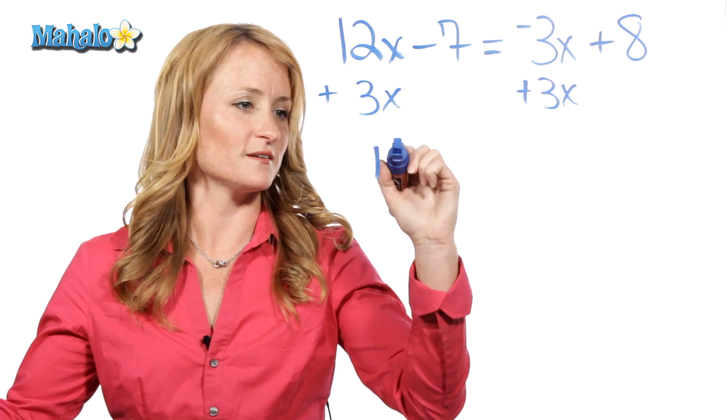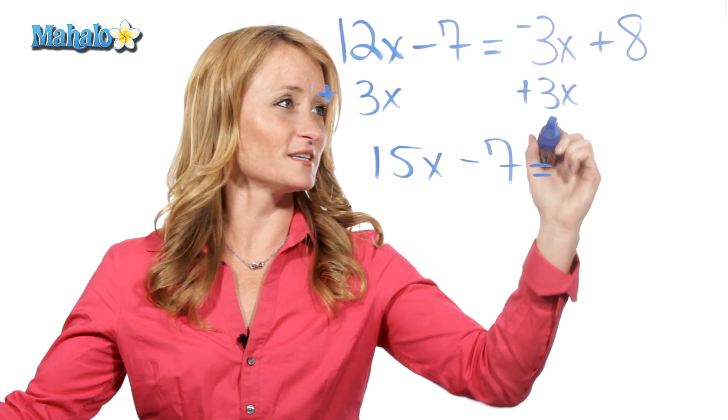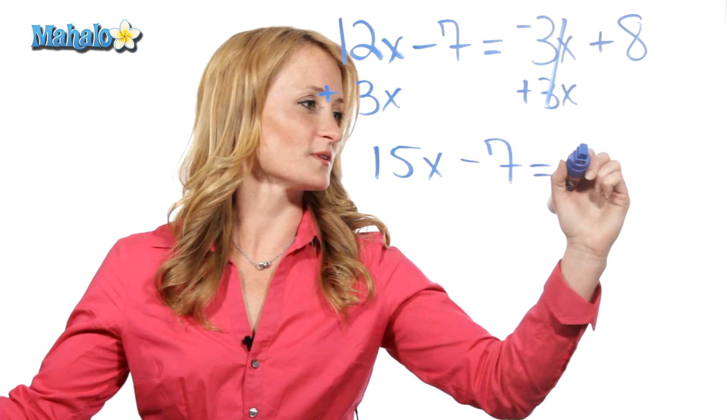So, 12 plus 3 is 15x minus 7 equals, this canceled this out, so we're left with 8.